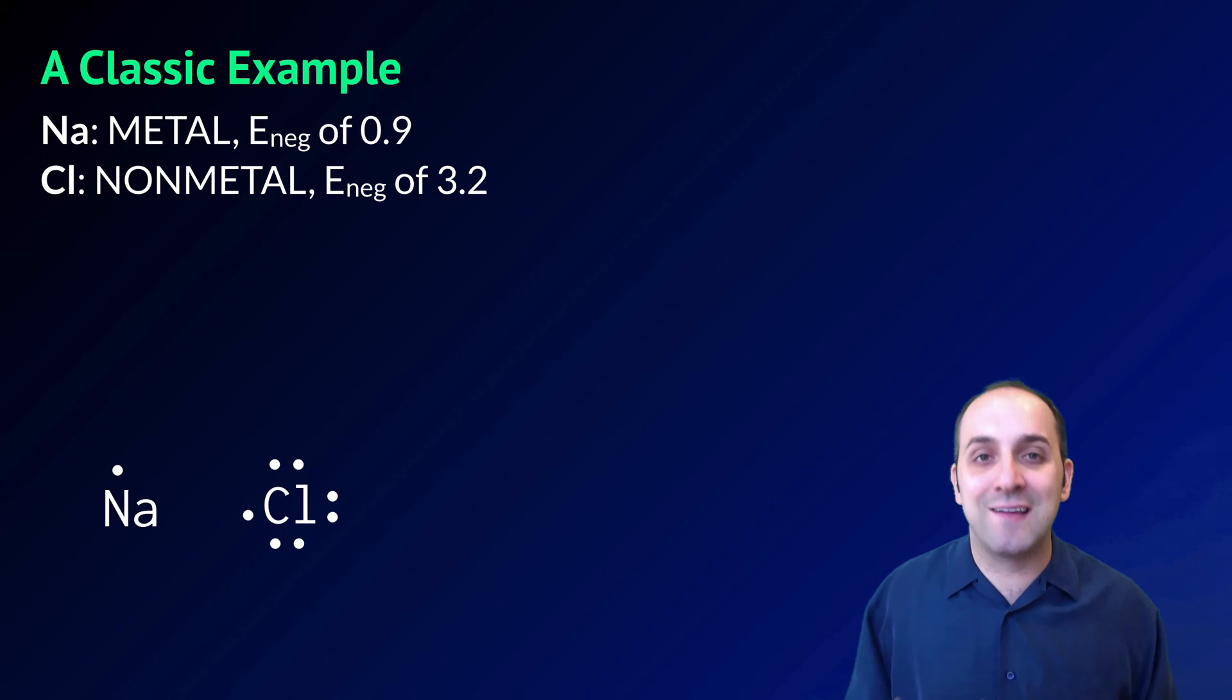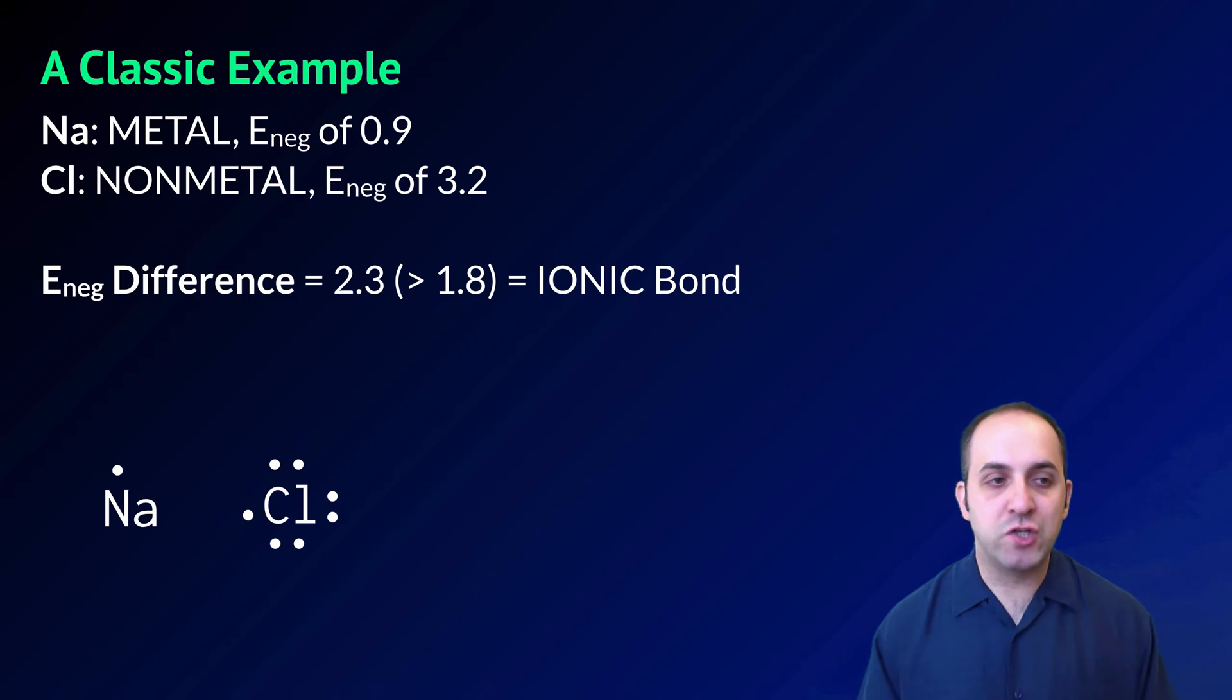Let's look at one classic example involving sodium and chlorine. Sodium is a metal. It's got an electronegativity of 0.9. Chlorine is a nonmetal. It has an electronegativity of 3.2. When it's neutral, sodium has one valence electron and when it's neutral, chlorine has seven valence electrons. When these two elements bond with each other, they're going to form an ionic bond because the electronegativity difference between them is greater than 1.8. Chlorine is more electronegative, so it's going to take sodium's valence electron and use it to complete its valence. As a result, sodium will become a positive ion and chlorine will become a negative chloride ion.